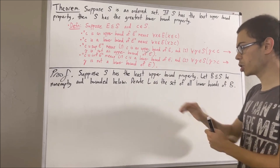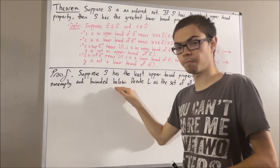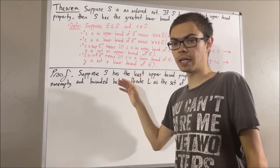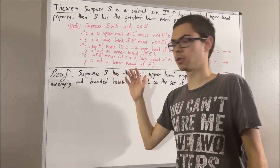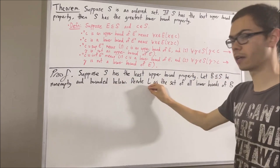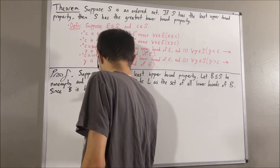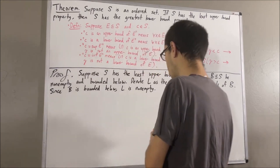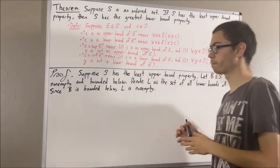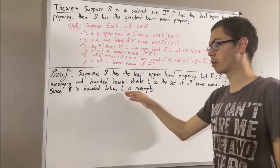Well, we can show that L is non-empty because we know that B is bounded below. Since B is bounded below, this means that B has a lower bound. And we know that the lower bound is going to be an element of L. So L is non-empty. Now, let's show that L is bounded above. And to show L is bounded above, this means we want to show that L has an upper bound.